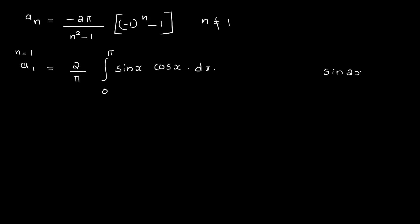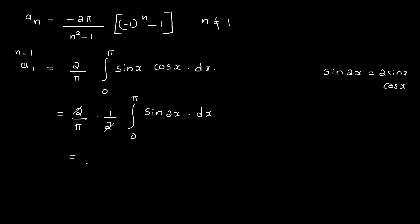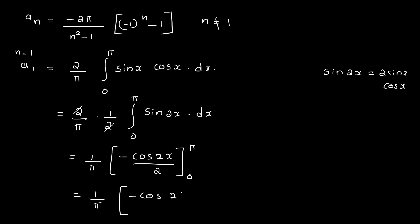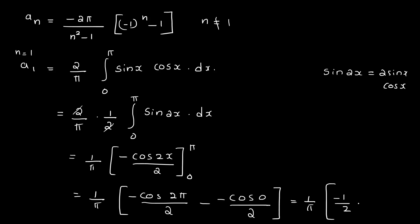Since sin x · cos x = (1/2) sin 2x, we get a₁ = 2/π × (1/2) integral from 0 to π of sin 2x dx = 1/π × [-cos 2x/2] from 0 to π = 1/π × [(-cos 2π)/2 - (-cos 0)/2] = 1/π × [-1/2 + 1/2] = 0.